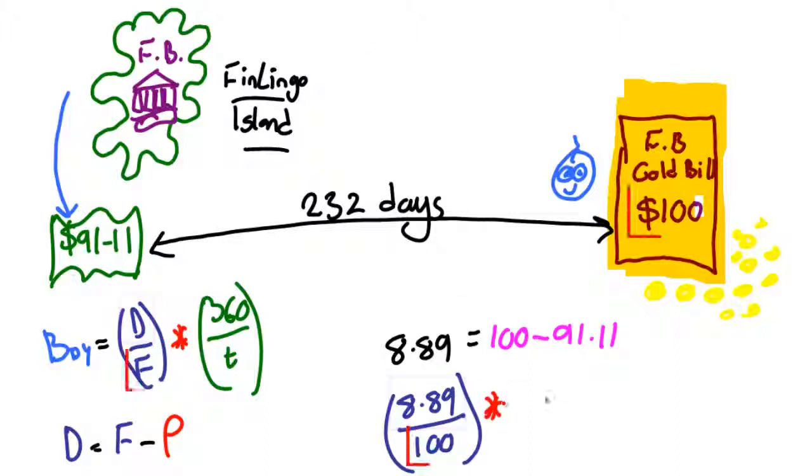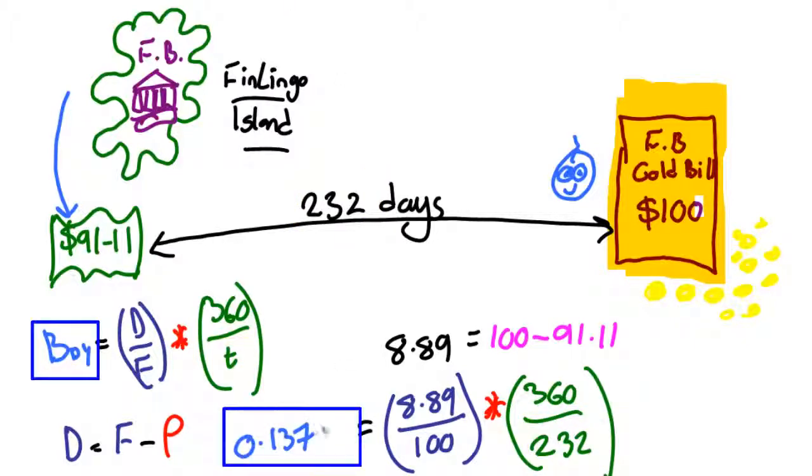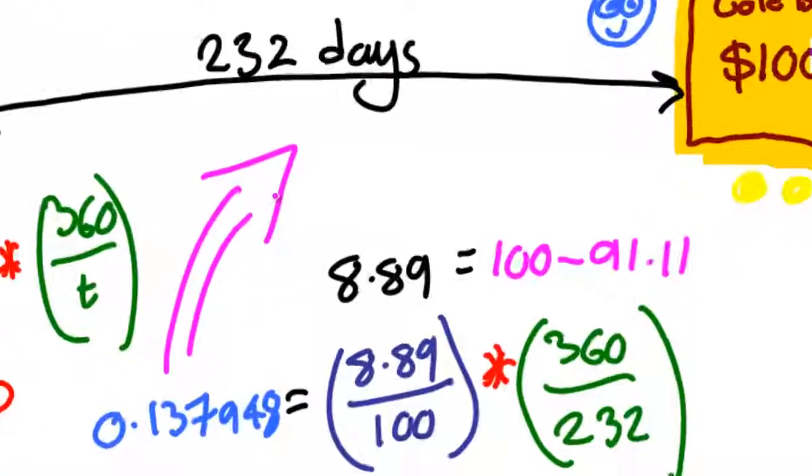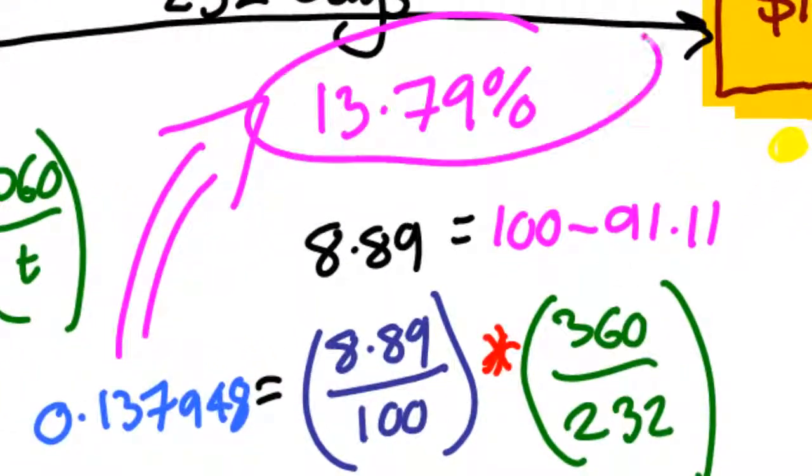which is 8.89 divided by 100 multiplied by 360 divided by 232, which is equal to 0.137948, and this is approximately equal to 13.79%.